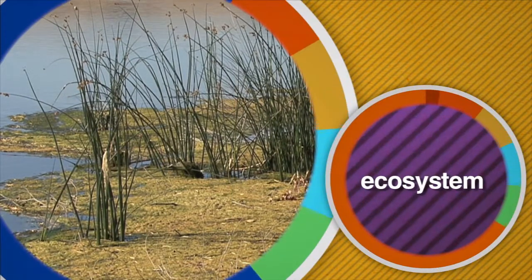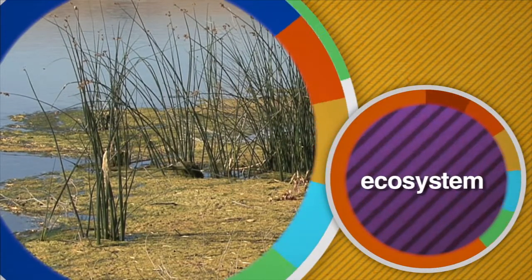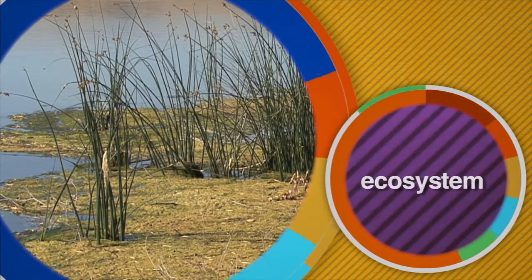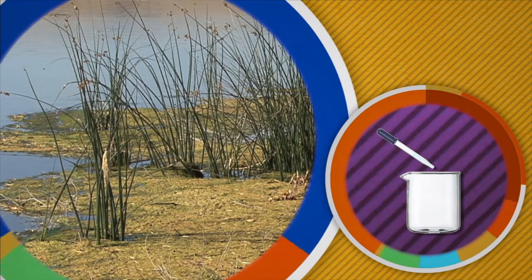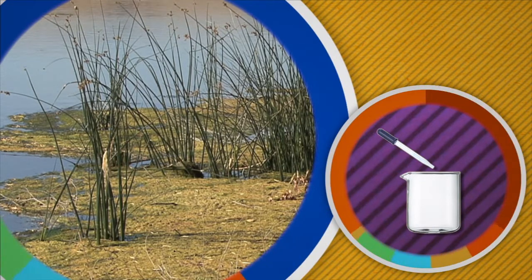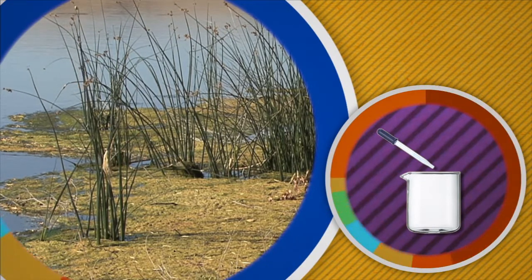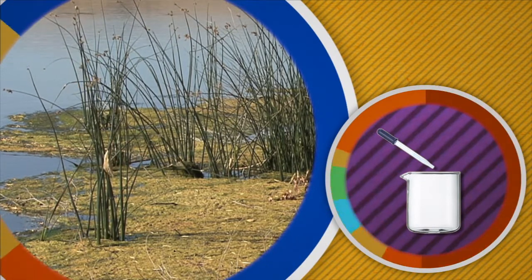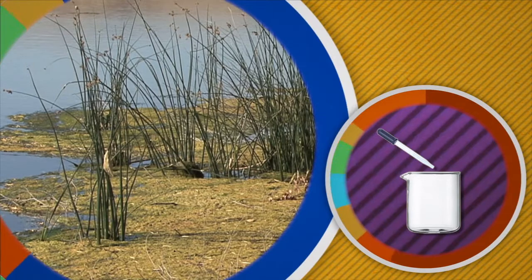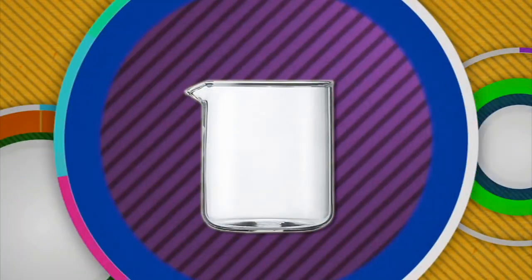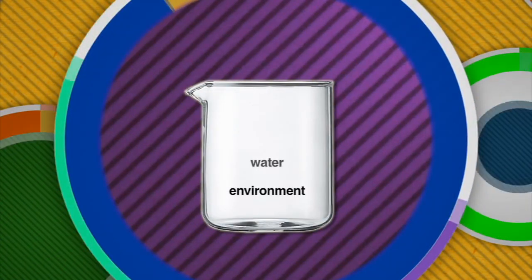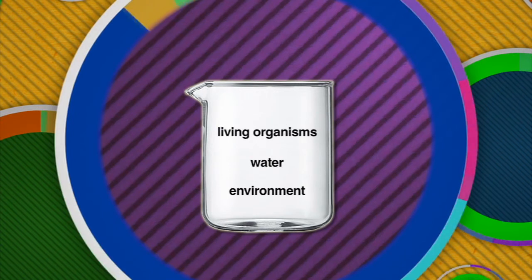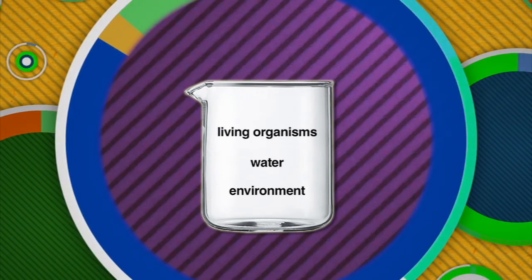So a pond is an ecosystem. But what about if we took a drop of pond water and put it in a dish? Well, this is an ecosystem too, only much smaller. There's still an environment — the water — and living organisms inside too, each working together to help maintain the other.